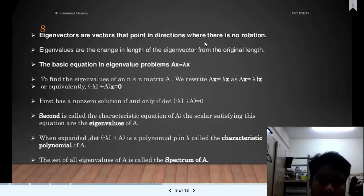Eigenvectors point in directions where there is no rotation. Eigenvalues are the change in length of the eigenvector from the original length.